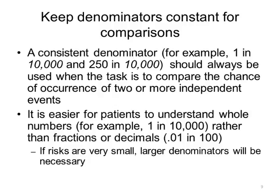A third strategy for communicating health risk is to keep denominators constant for comparisons. It is difficult for patients to compare across treatments when different denominators are used. Therefore, a consistent denominator — such as 1 in 10,000 and 250 in 10,000 — should always be used when comparing the chance of occurrence of two or more independent events. It is also easier for patients to understand whole numbers, such as 1 in 10,000, rather than fractions or decimals like 0.01 in 100. Thus, if risks are very small, larger denominators will be necessary.